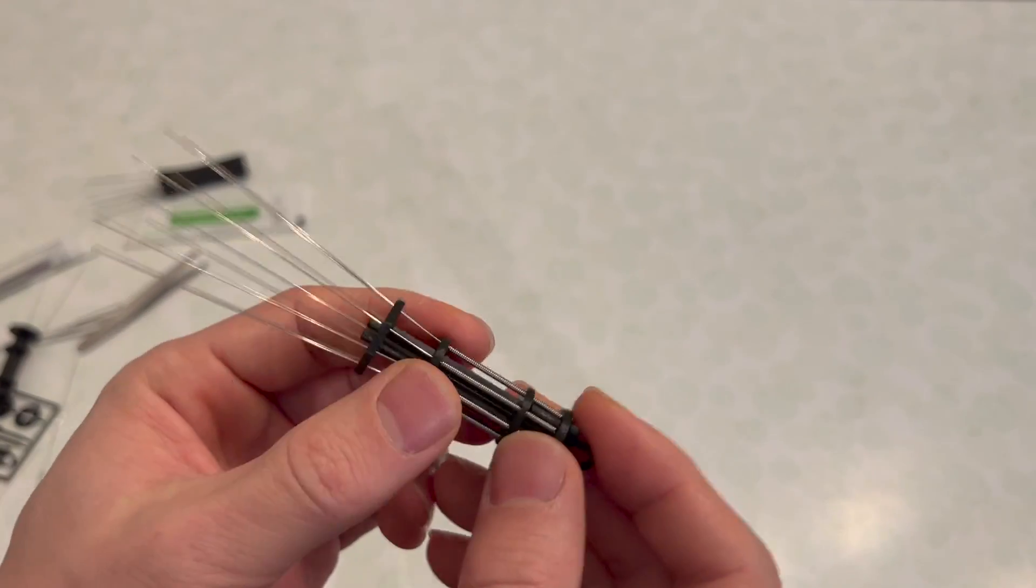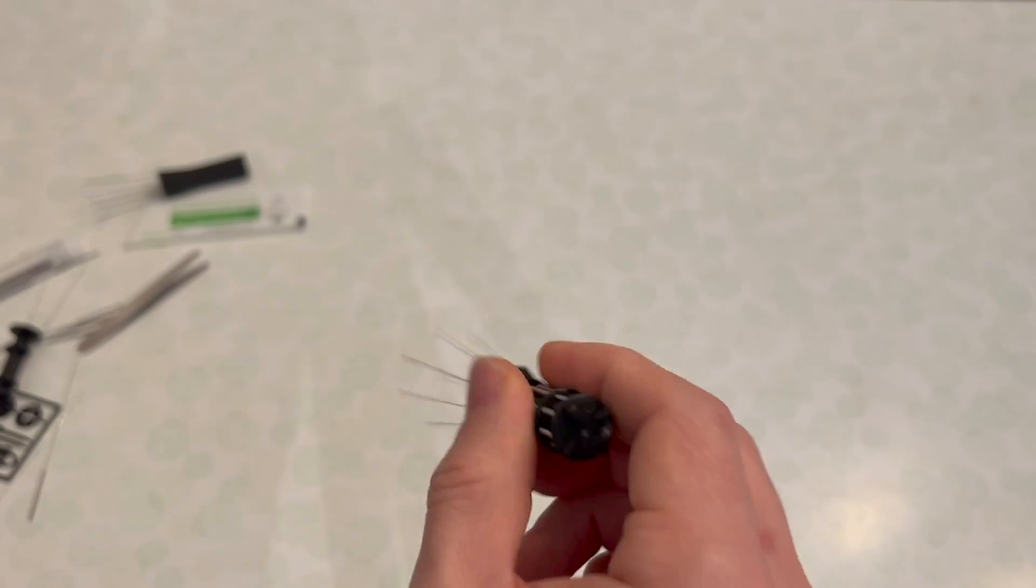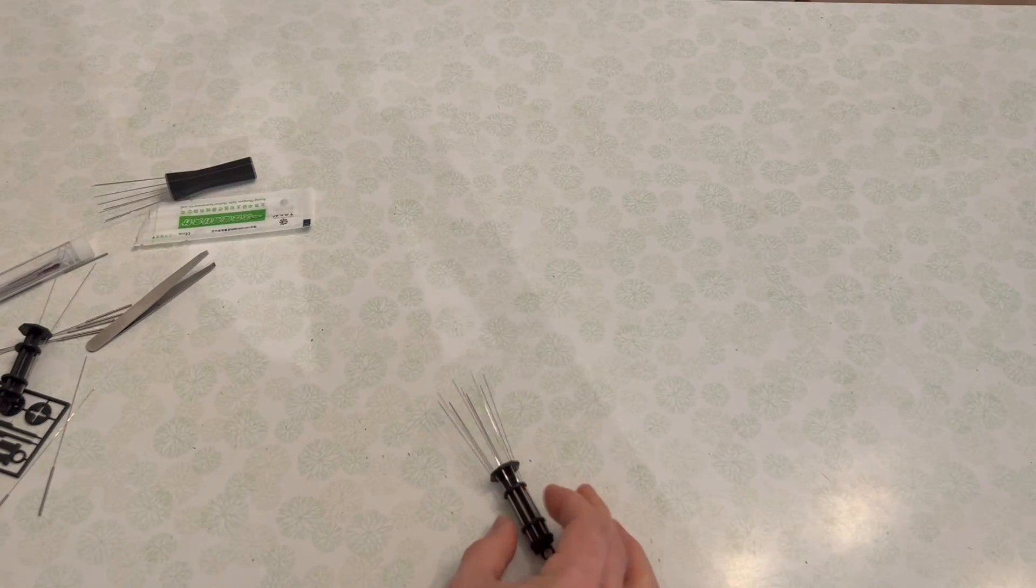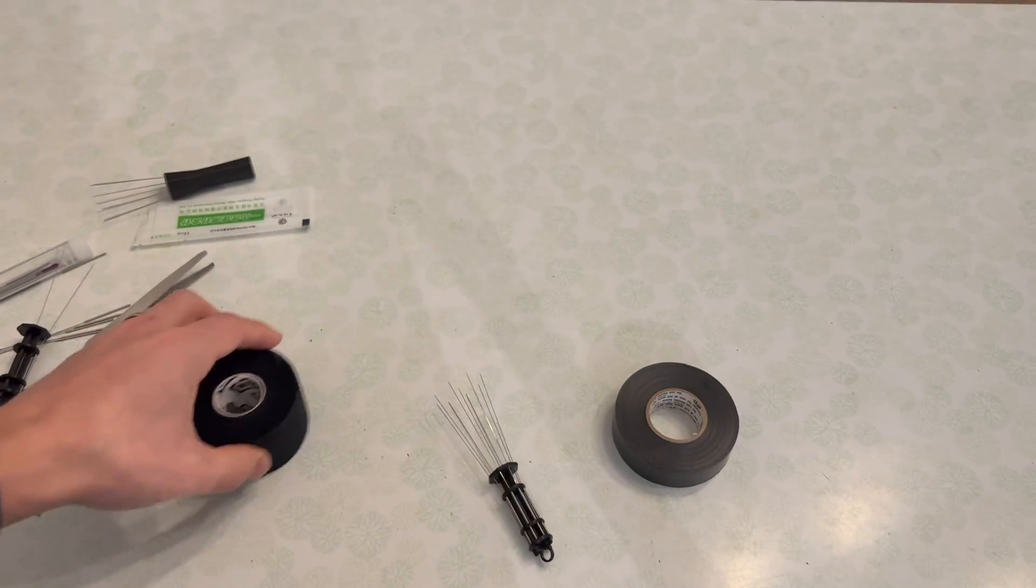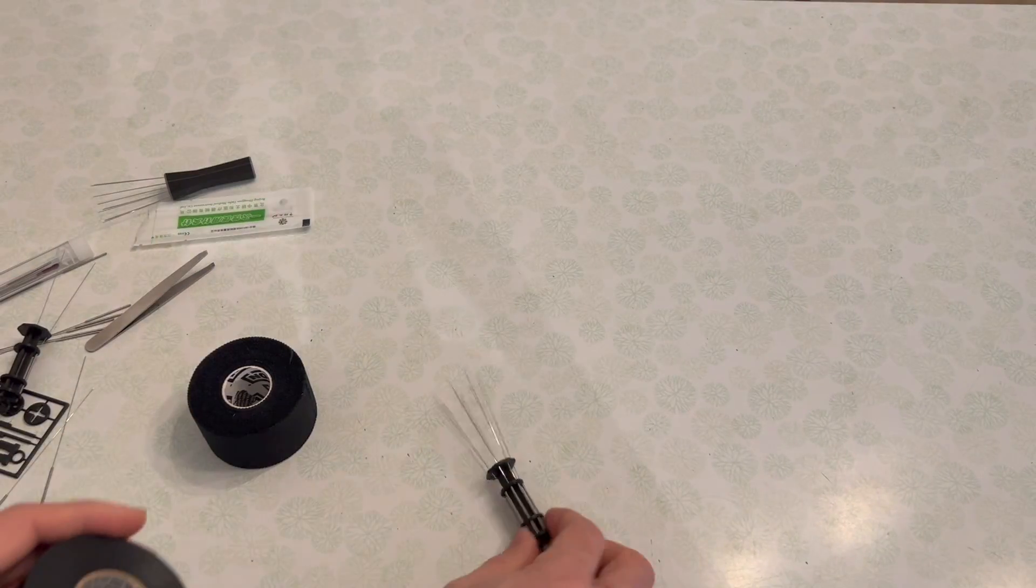Alright, so once you're done with this, you can just use it like this, or what you can do is take some tape - I have here some electrical tape, some cloth tape - and you can wrap it around this handle.